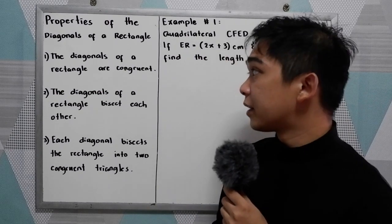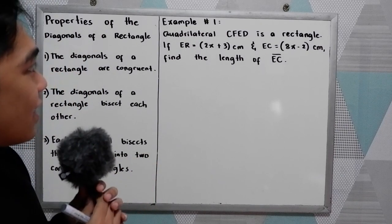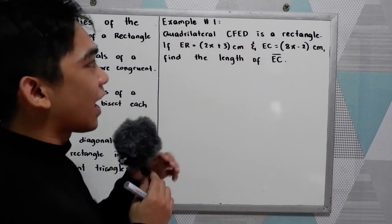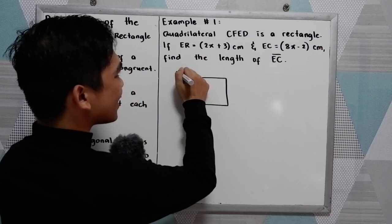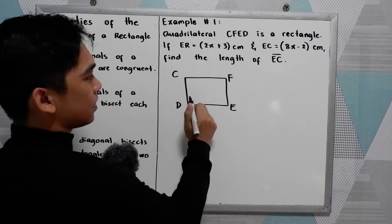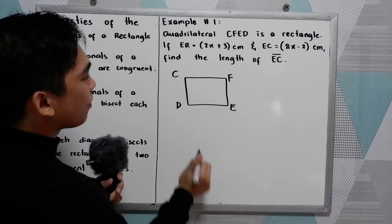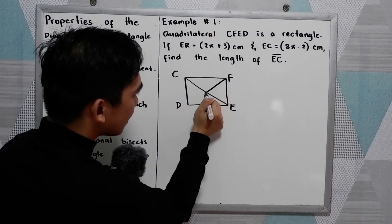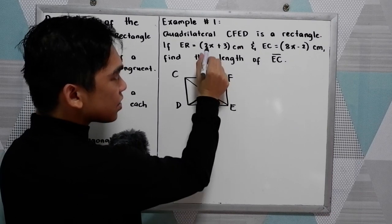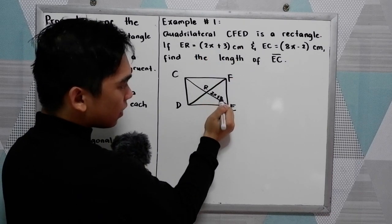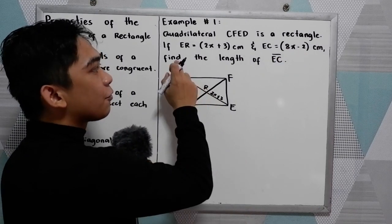Let's have examples in solving diagonals using these properties of rectangles. Example number one: quadrilateral C-F-E-D. We have our diagonal, and our intersection point is R. If E-R is 2x plus 3, and E-C is equal to 8x minus 2 centimeters, find the length of E-C.